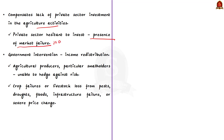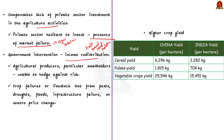It also benefits agricultural producers, particularly small landholders who are unable to hedge against risk. When faced with crop failures or livestock loss from pest, drought, flood, infrastructure failure, or severe price changes, government intervention in terms of income redistribution is important.